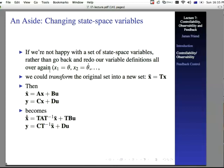then that becomes X bar dot is equal to TAT to the minus 1 times X bar plus TBU. We've pre-multiplied and post-multiplied, right, A here, and the T minus 1 X bar replaces X, and we get the X bar dot by pre-multiplying on the right-hand side by just plain old T. Y ends up being CT to the minus 1 X bar, where we've replaced X with that quantity, and then we have DU that's left just as before.